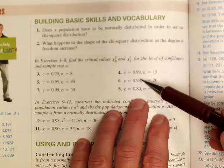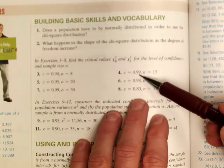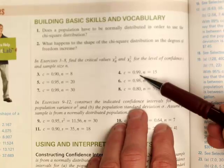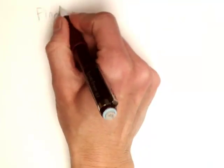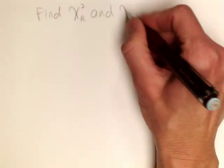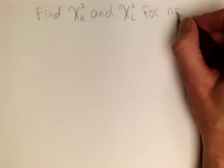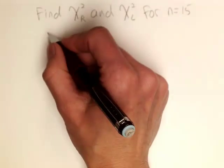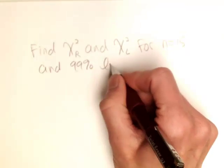Let's take a look at this one. My level of confidence is given to be 99% or .99 with a sample size of 15. I want to find chi-square-sub-R, my upper critical value, and chi-square-sub-L, my lower critical value, for n equal to 15 and a 99% level of confidence.